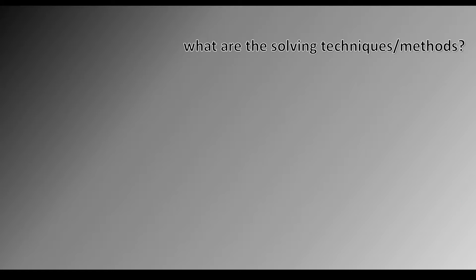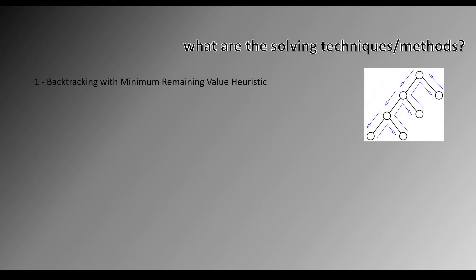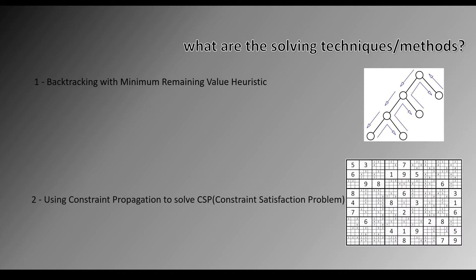What are the solving techniques or methods? The first one is the backtracking method with the minimum remaining value heuristic. The second one is using constraint propagation to solve CSP, or constraint satisfaction problem.